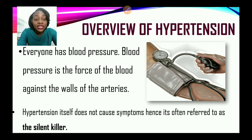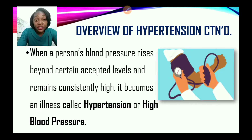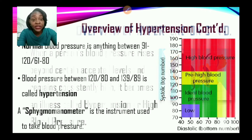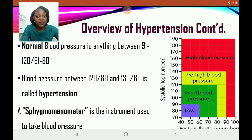Hypertension itself does not cause symptoms. Hence, it is referred to as the silent killer. When a person's blood pressure rises beyond certain accepted levels and remains constantly high, it becomes an illness called Hypertension or High Blood Pressure. Let's look at the different ranges of blood pressure.